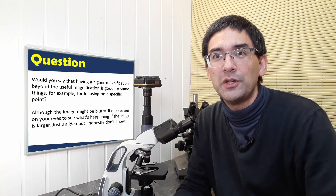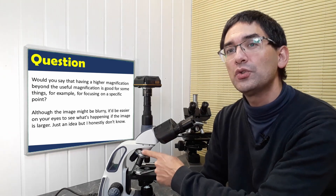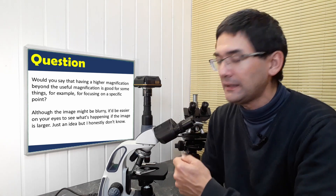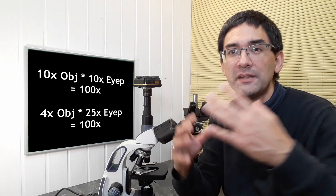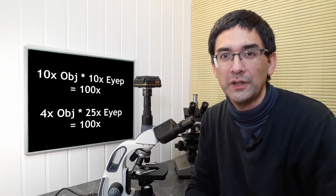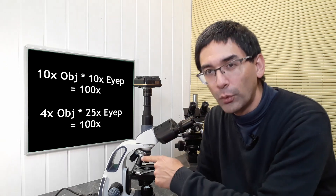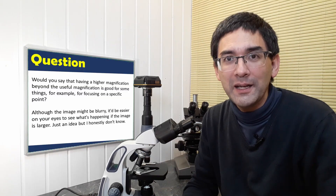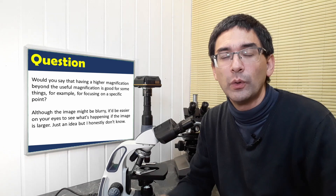Generally when you use a microscope you are using a 10× eyepiece and then you change the magnification using the objective. You get the total magnification by multiplying these. For example, you can get 100× magnification by using a 10× objective multiplied by the 10× eyepiece. You can also get the same magnification by using a 25× eyepiece and a 4× objective, but that is rarely done — because even though you have the same magnification, it looks more blurry.